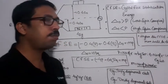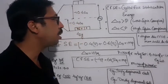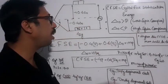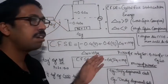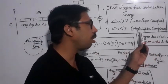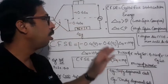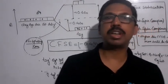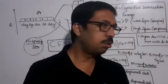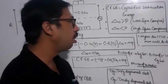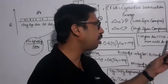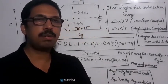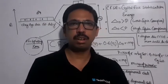A low-spin complex means the ligand is a strong-field ligand. The condition for this is delta-o greater than P. If delta-o is less than P, the complex will be a high-spin complex, meaning the ligand is a weak-field ligand. Higher the CFSE value, more will be the stability of the complex.